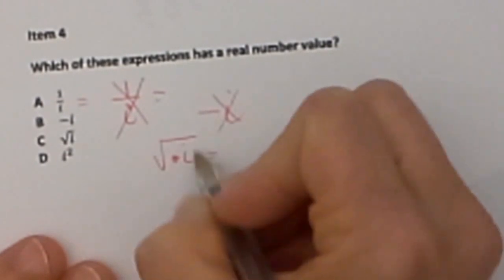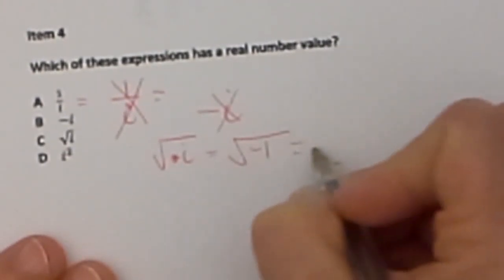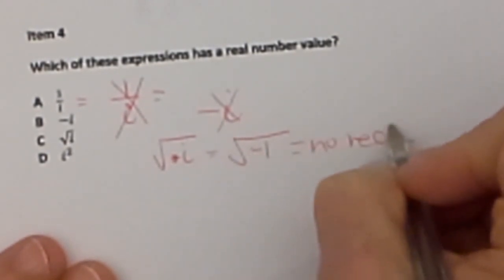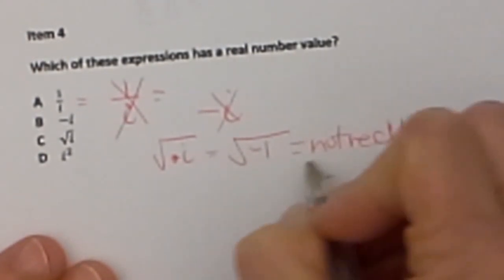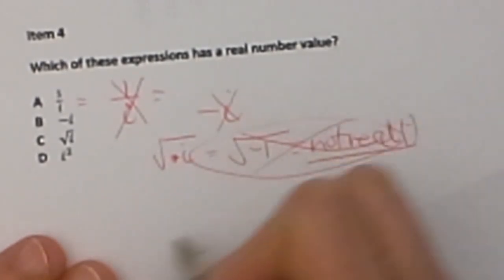Now we have the square root of negative I. Well, if you know I, I is the value negative 1. So we are taking the square root of a negative. That is not real, is it? That one is not a real answer. So it is definitely not that one.